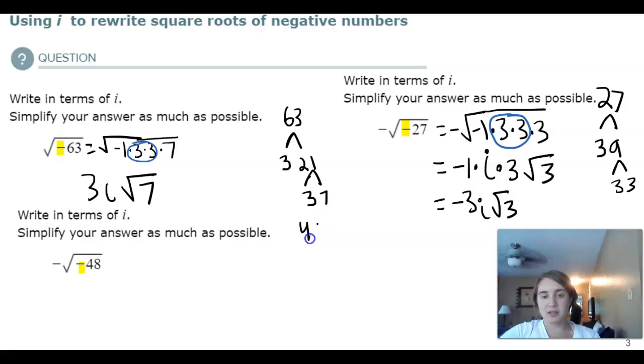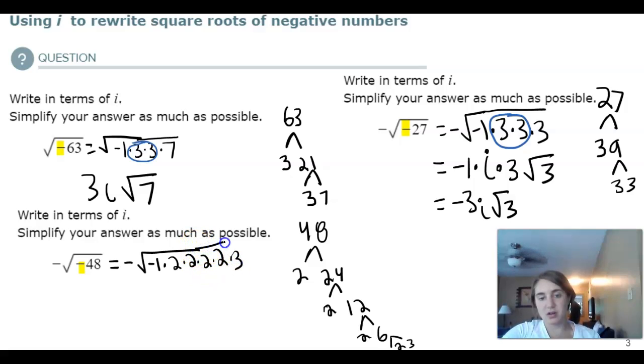Negative 48, 2 and 24, 2 and 12, 2 and 6, 2 and 3. This becomes negative 1 times 2 to the fourth times 3. I can group everything by twos. On the inside, underneath the radical is a 3. Negative 4i square root 3.